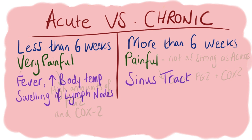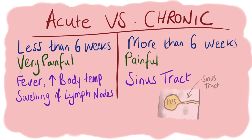In the acute phase of osteomyelitis, the patient will also have a fever, increased body temperature, and swelling of adjacent lymph nodes. With chronic osteomyelitis, we may also see the formation of a sinus tract, which is a tube filled with pus directed away from the infected site due to pressure build-up in the area of infection.